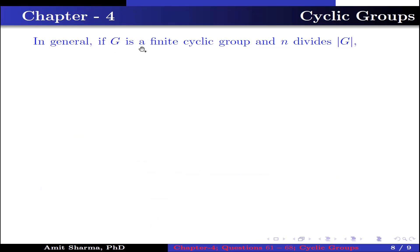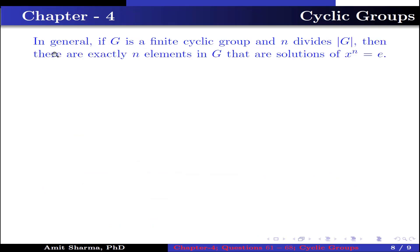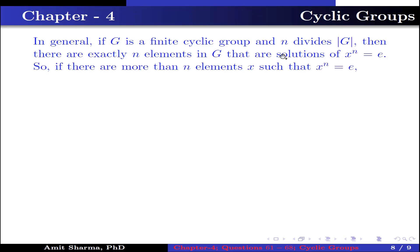In general, if G is a finite cyclic group and n divides the order of G, then there are exactly n elements in G that satisfy x^n = e. So if there are more than n elements x such that x^n = e, then the group is not cyclic.